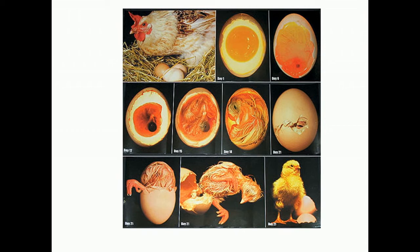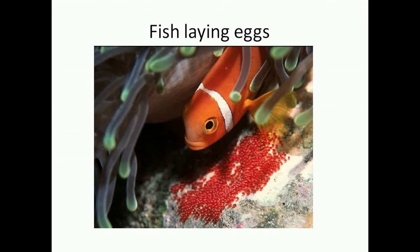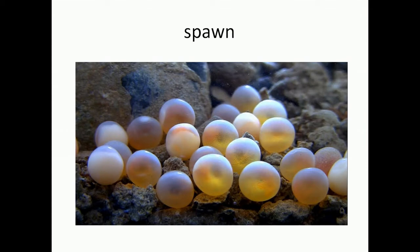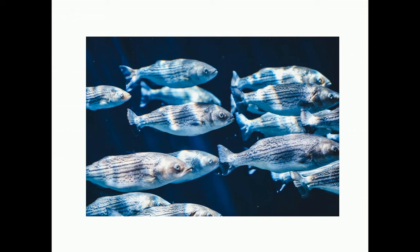Now we shall learn about other living things that also lay eggs. Many of you must be having aquariums or must have been to lakes where there are lots of fishes. Fishes lay thousands of eggs in the water. The eggs either stick to rocks and aquatic plants, or they simply keep floating. These eggs of the fish are called spawns. Even though fishes lay thousands of eggs, only a few hatch, as their parents are not there to take care of them. Unlike birds, fish do not incubate their eggs. The newly hatched fishes are called fry, and the fry later grow into adult fishes.